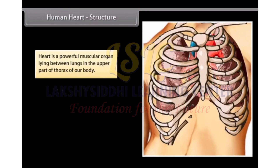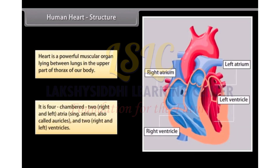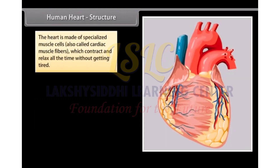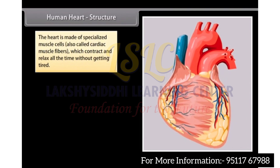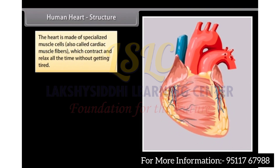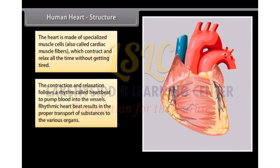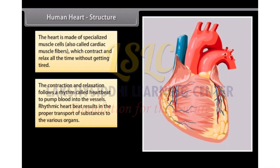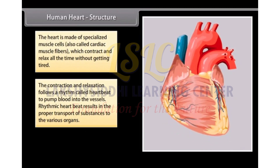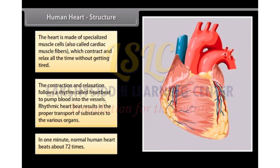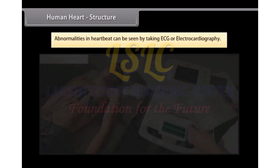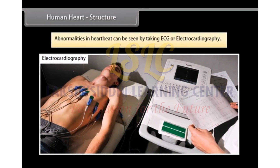Heart is a powerful muscular organ lying between lungs in the upper part of the thorax of our body. It is four-chambered: two right and left atria, also called auricles, and two right and left ventricles. The heart is made of specialized muscle cells, also called cardiac muscle fibers, which contract and relax all the time without getting tired. The contraction and relaxation follows a rhythm called heartbeat to pump blood into the vessels. In one minute, a normal human heart beats about 72 times. Abnormalities in heartbeat can be seen by taking ECG or electrocardiography.